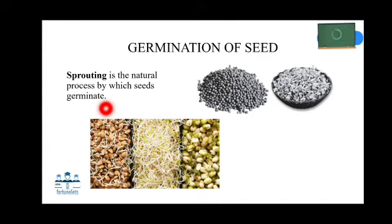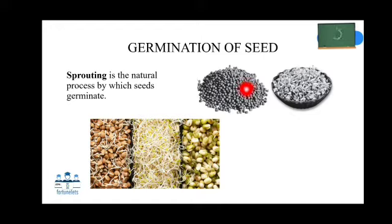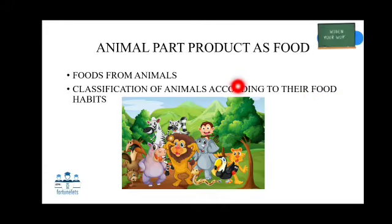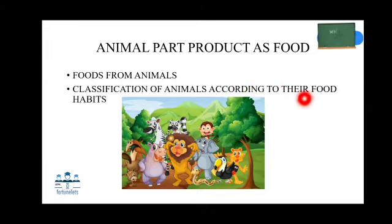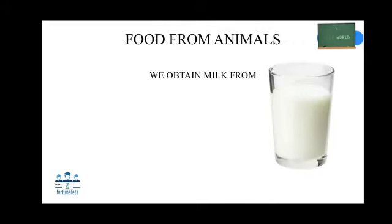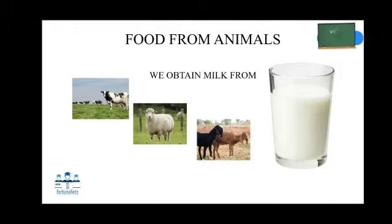So far you have learnt how plant products are being used as food and how a tiny seed grows into a bigger plant. Now let's learn about animal part products as food. In this, you will be learning about foods from animals and the classification of animals according to their food habits. We obtain milk from cow, sheep, goat, etc.